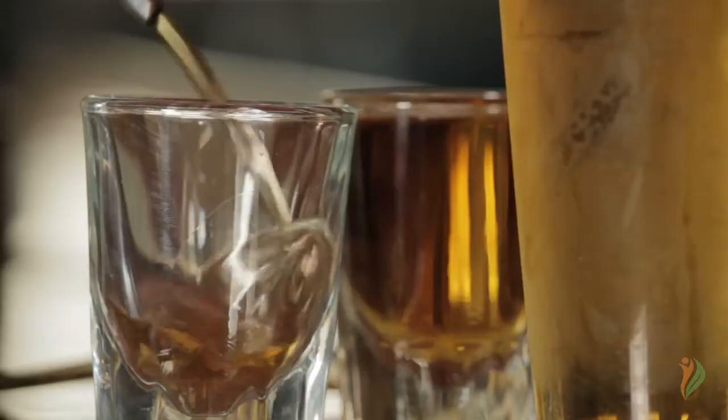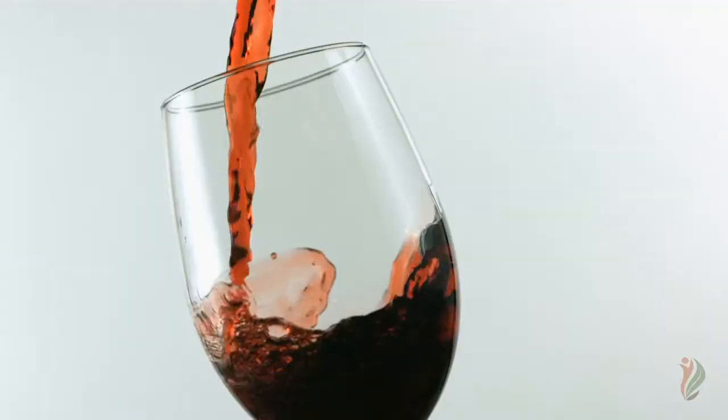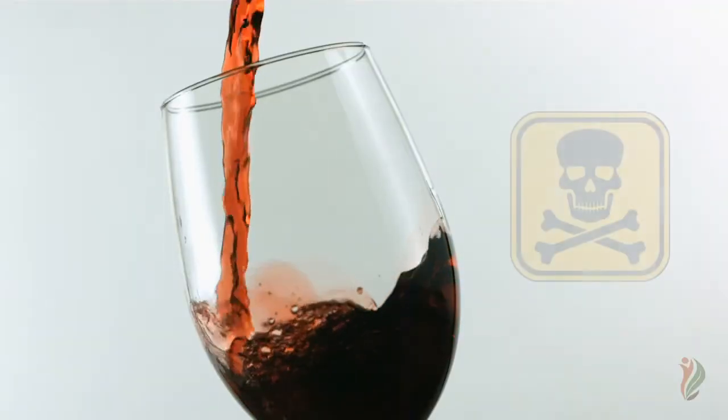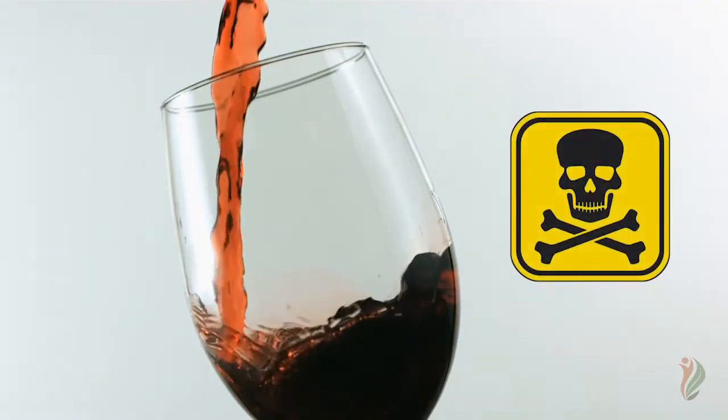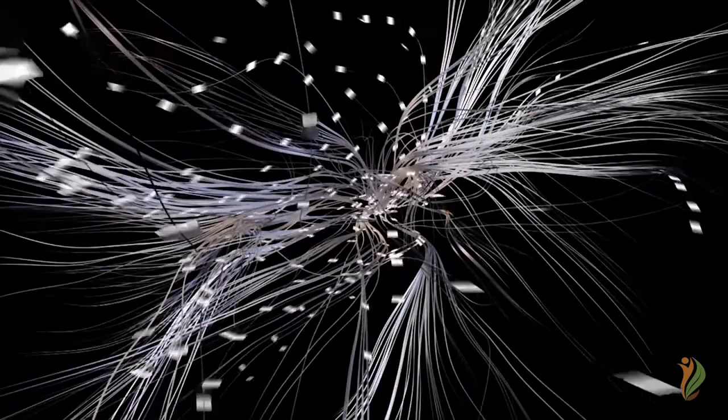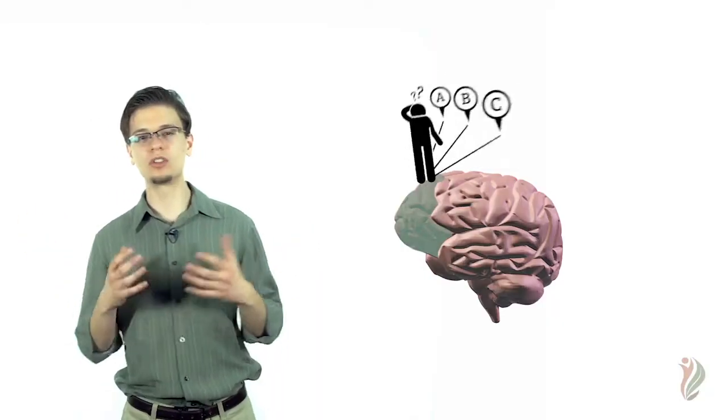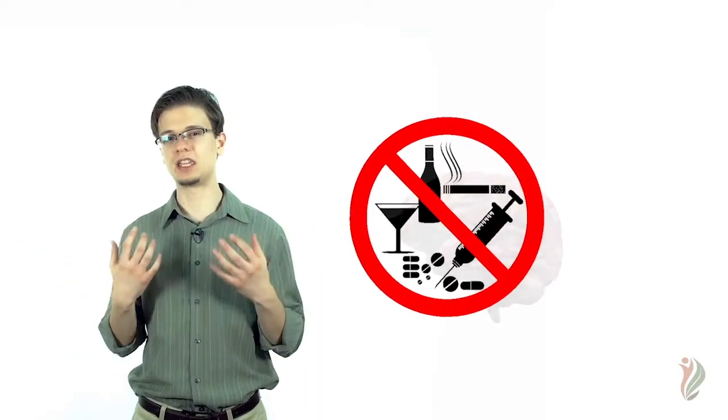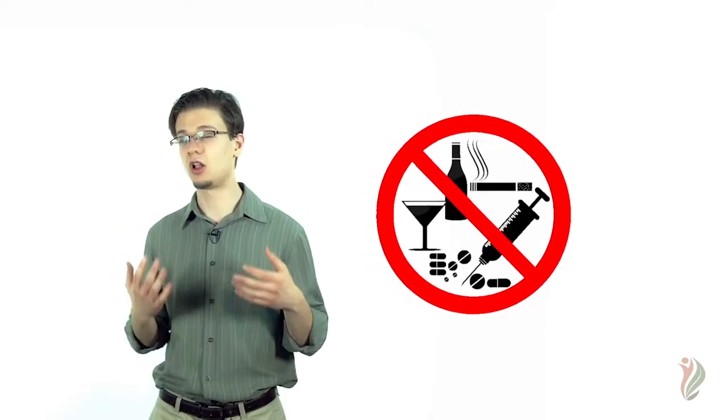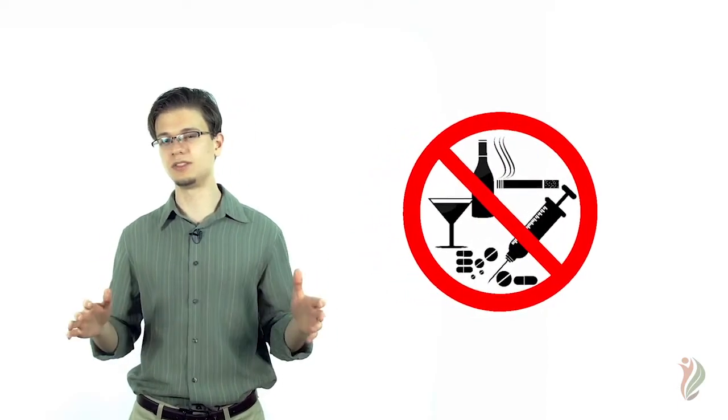So this begs the question, if drugs and alcohol can be so dangerous to the nature of the brain that it completely rewires it into a repeated pattern of use, why not just stop? Why doesn't the prefrontal cortex actually make the executive decision that drugs and alcohol are not good and we should cease using? If only it were that simple though.